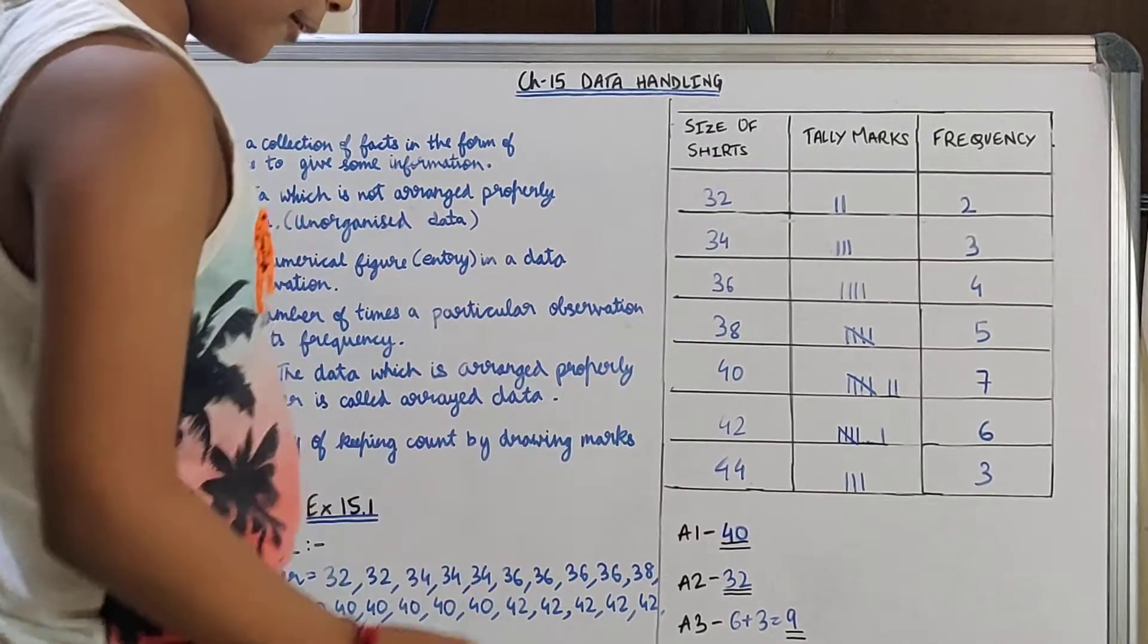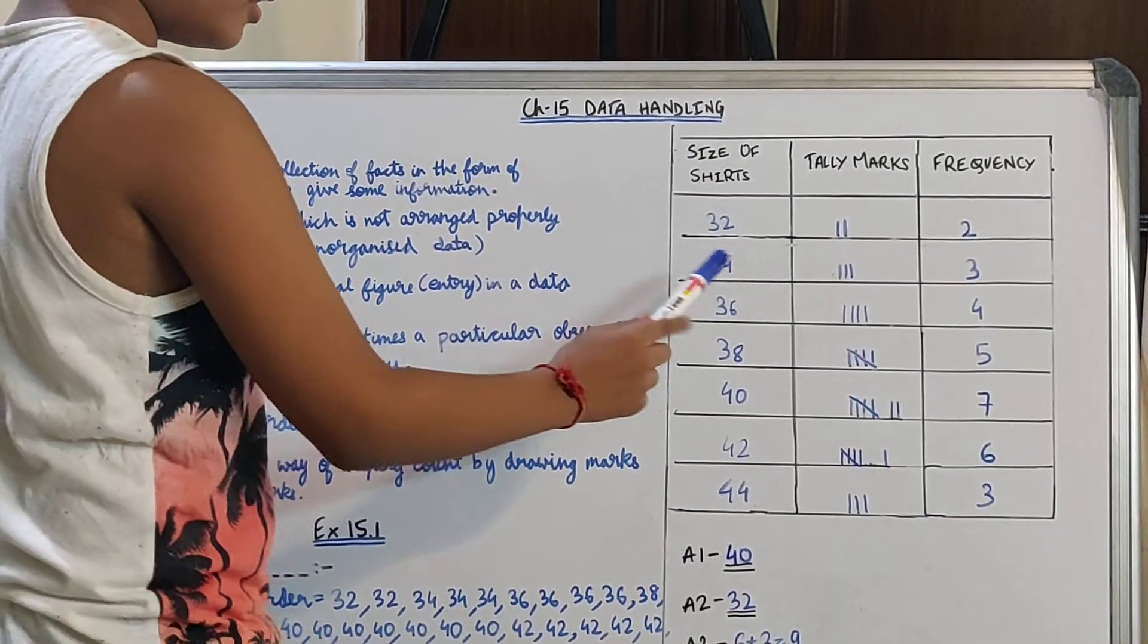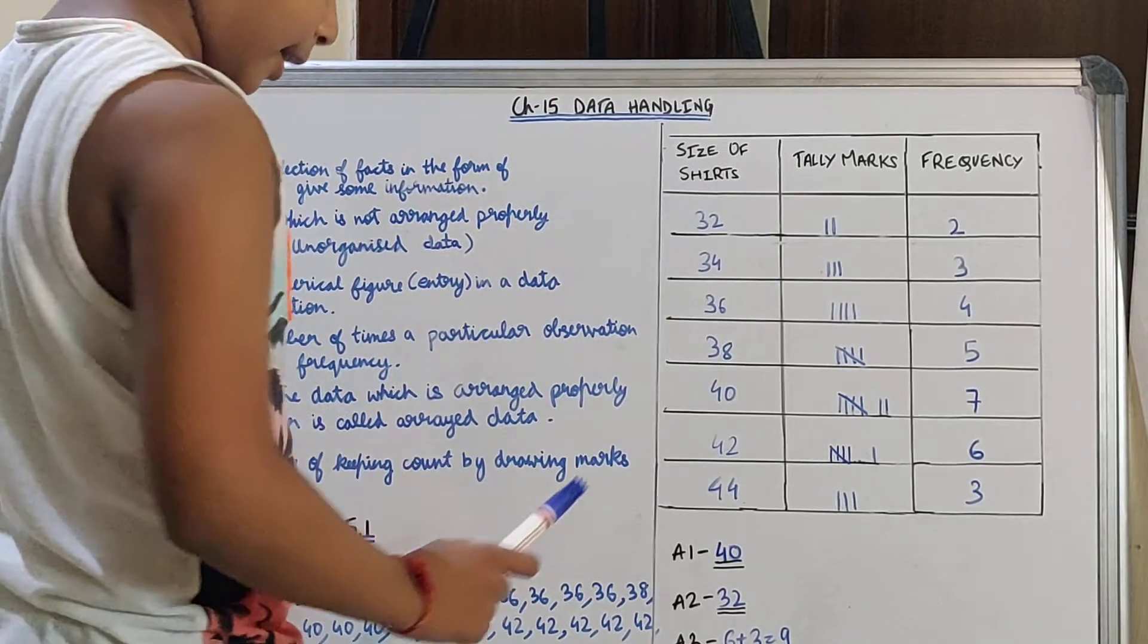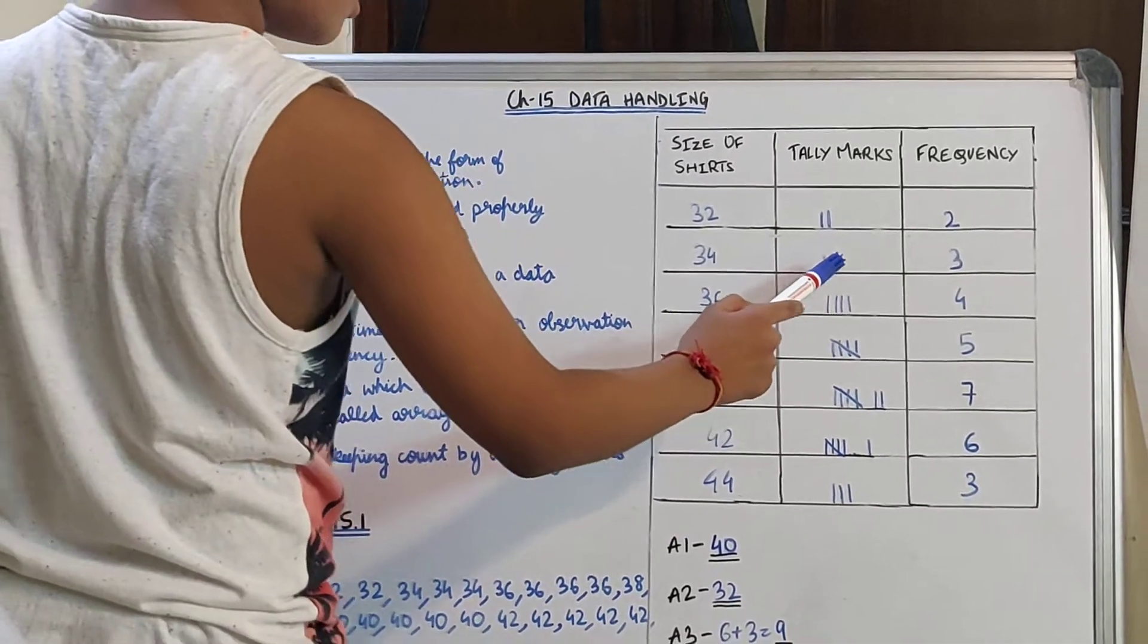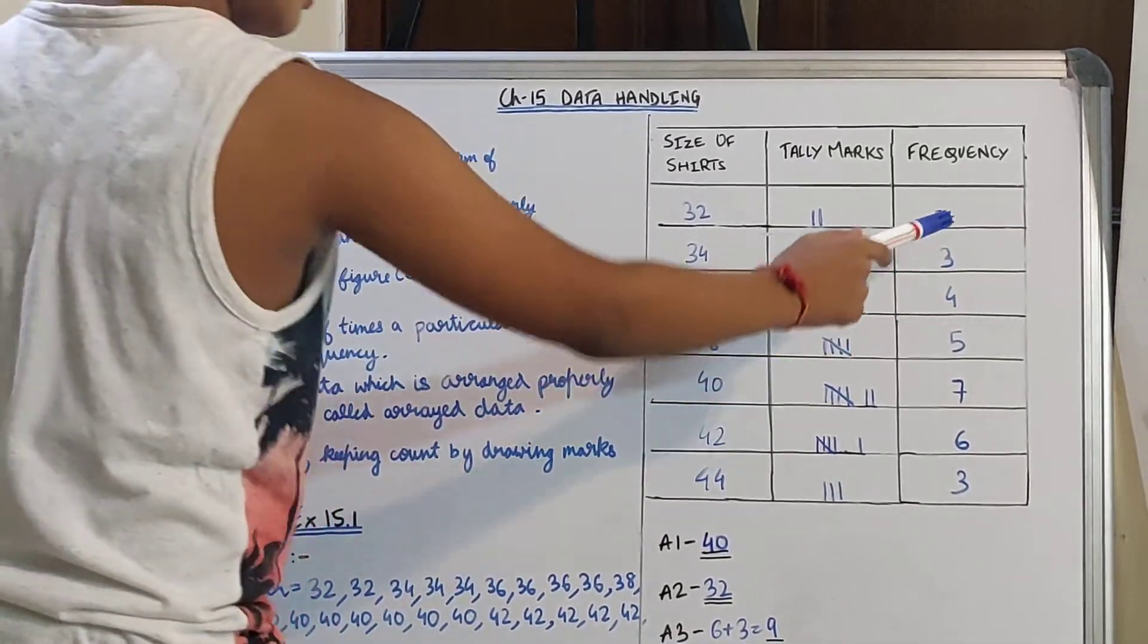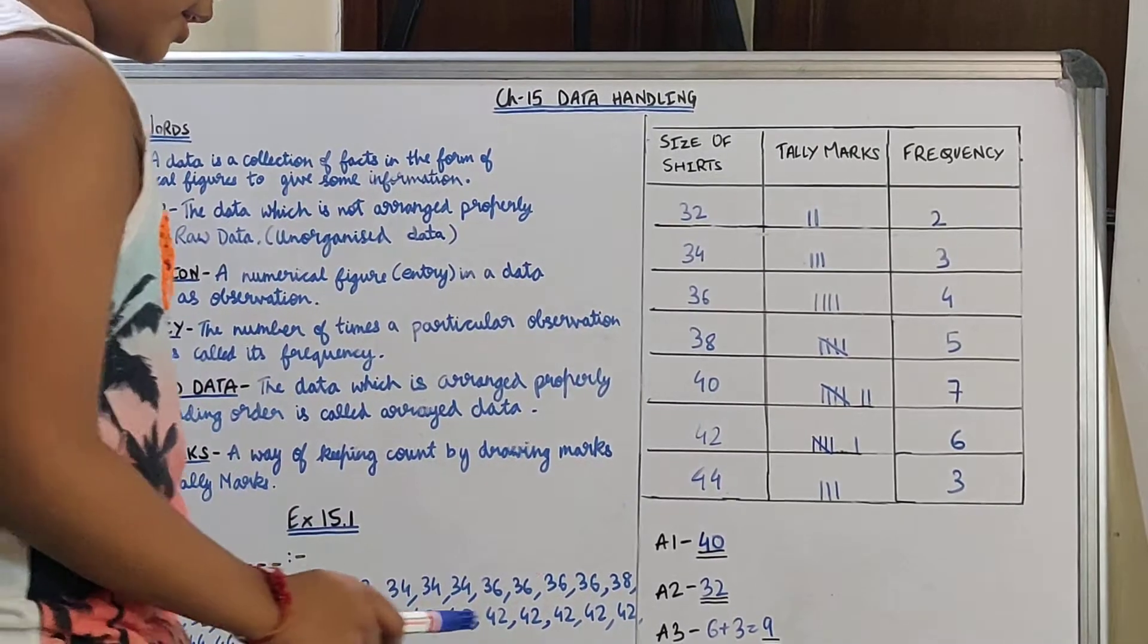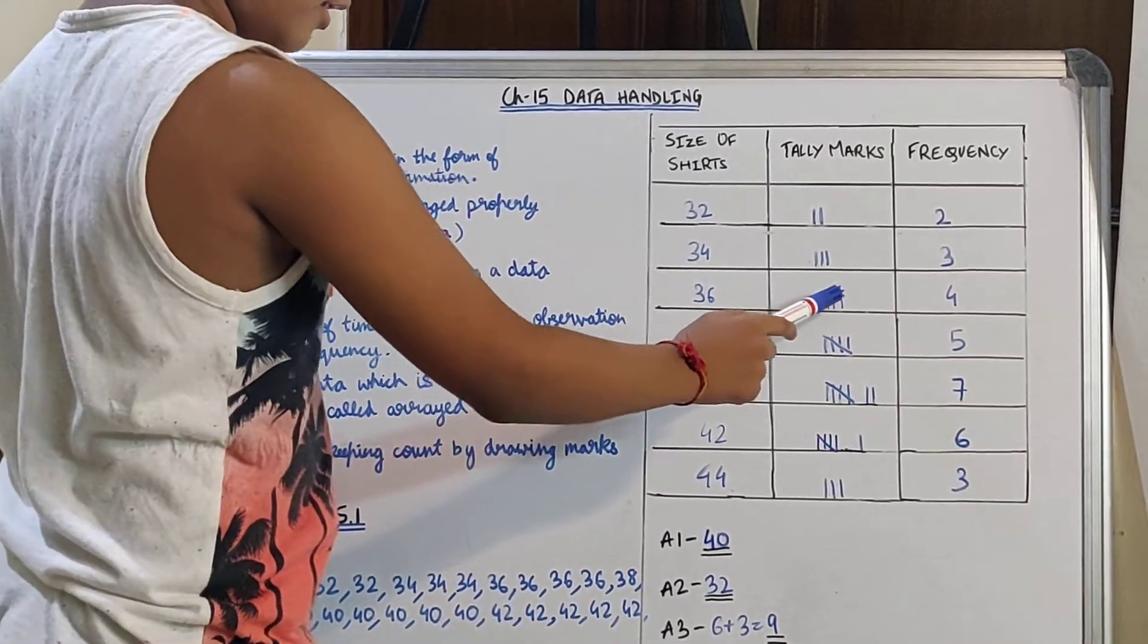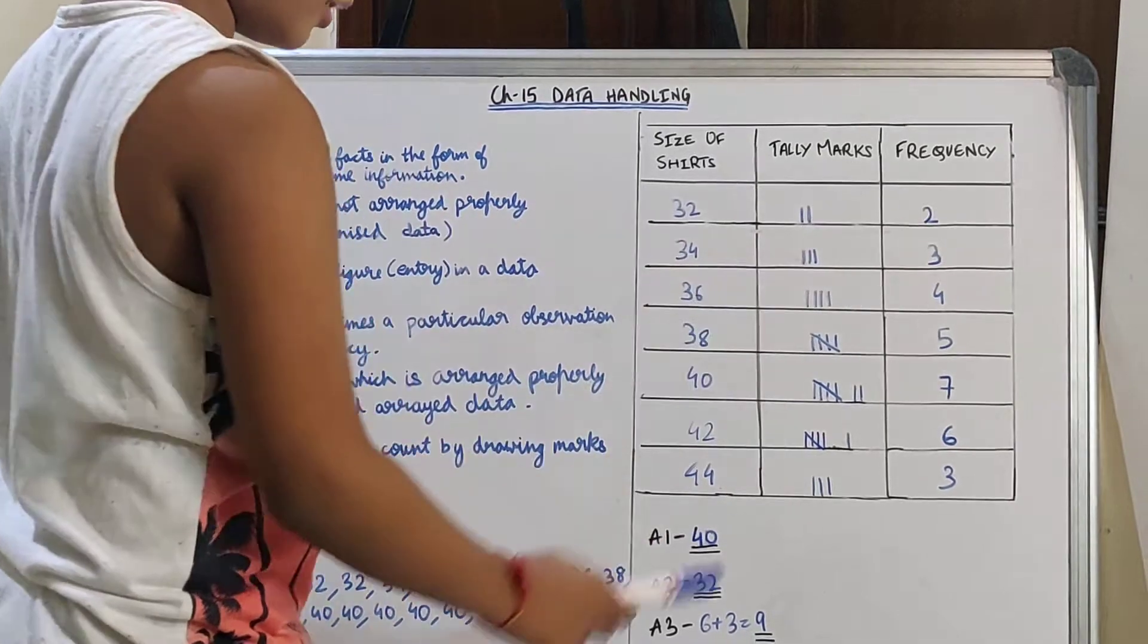Then 34 size. Here 34 is repeated 3 times. So we will write 3 tally marks and in frequency we will write 3. Then 36, 4 tally marks, 4 in the frequency.